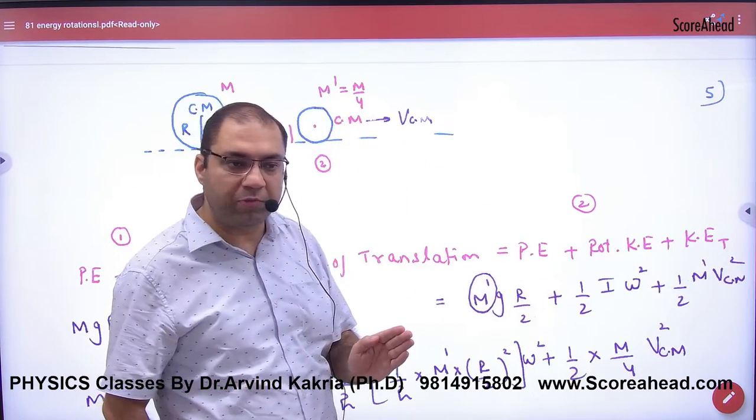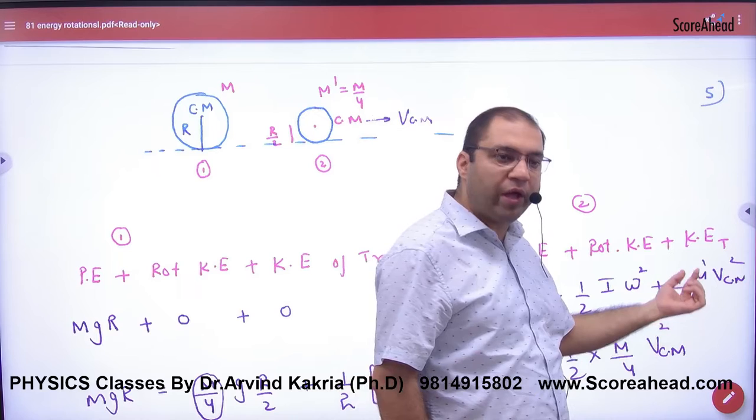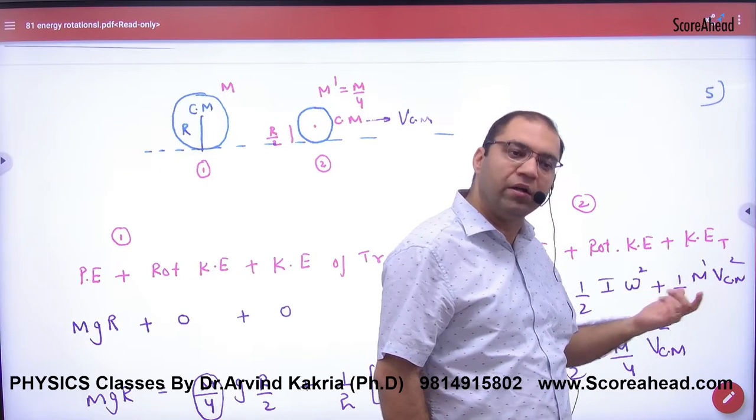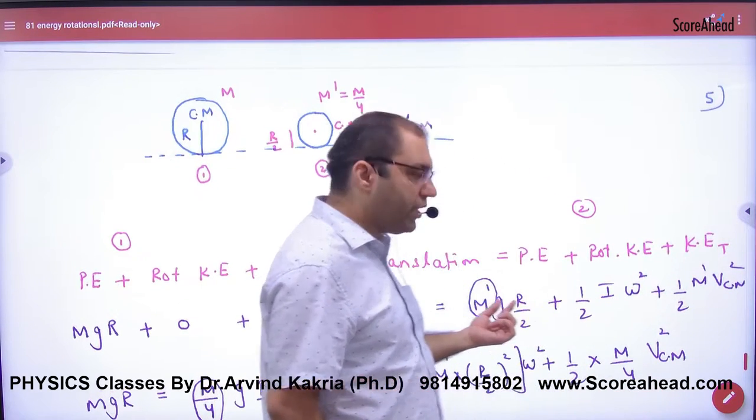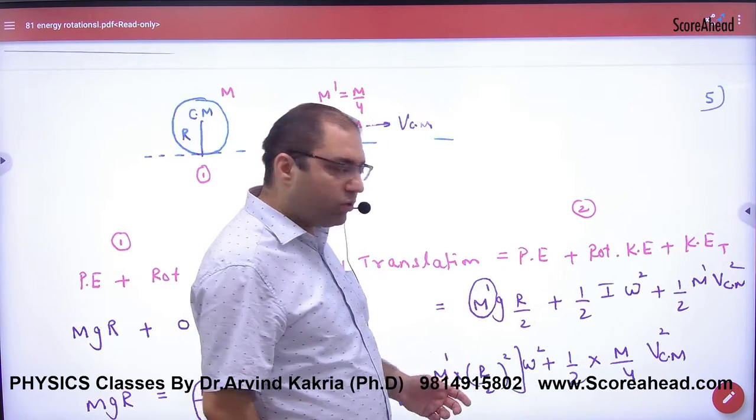And the center of mass is in translation motion, so what is the formula? Half × M by 4 × V center of mass squared. So this is translation, this is rotation, this is potential energy.